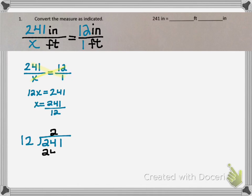I want to do the long division to find out how many whole feet I can get out of 241 inches. So when I do the division, I get 20 remainder 1.